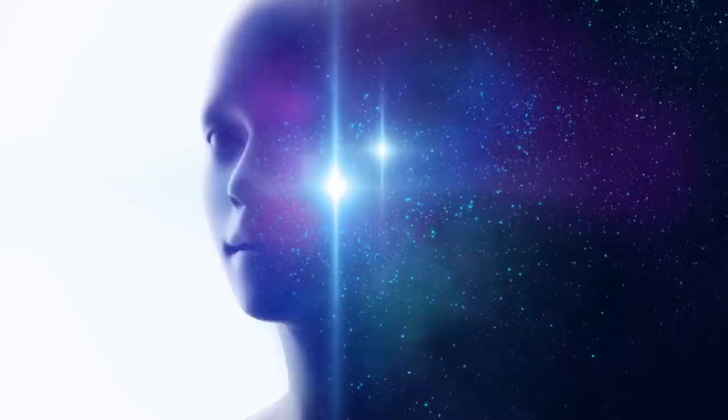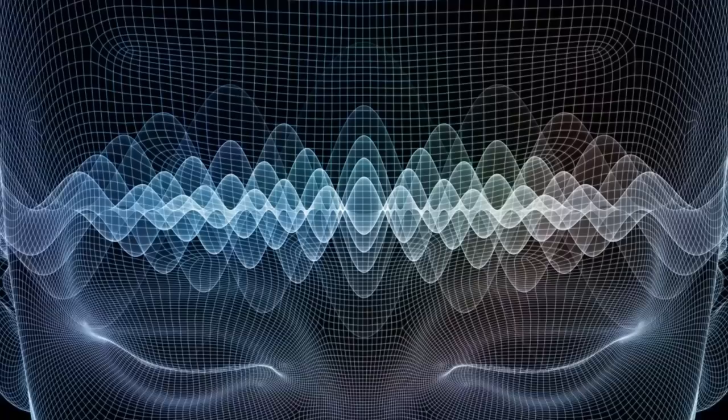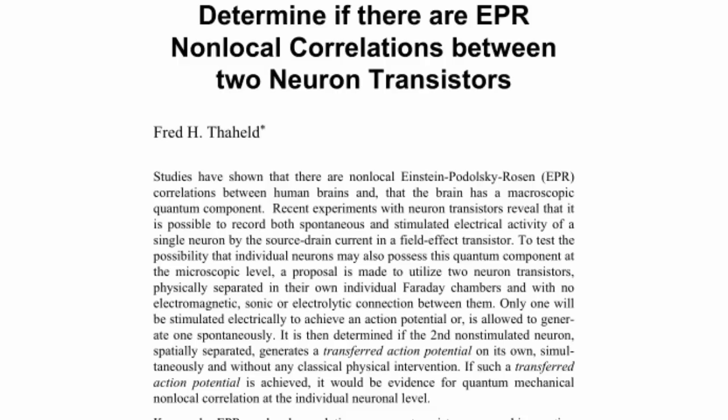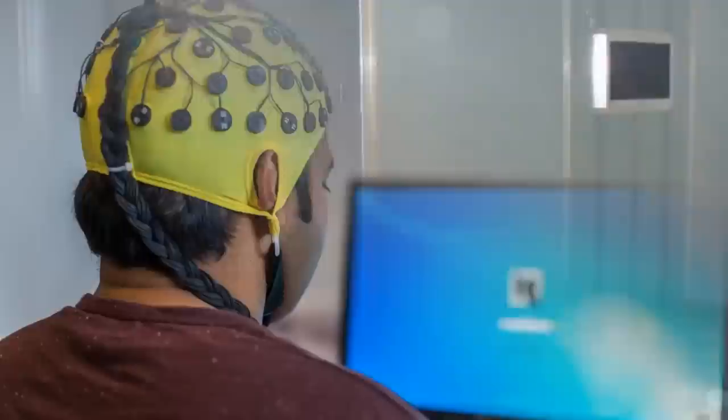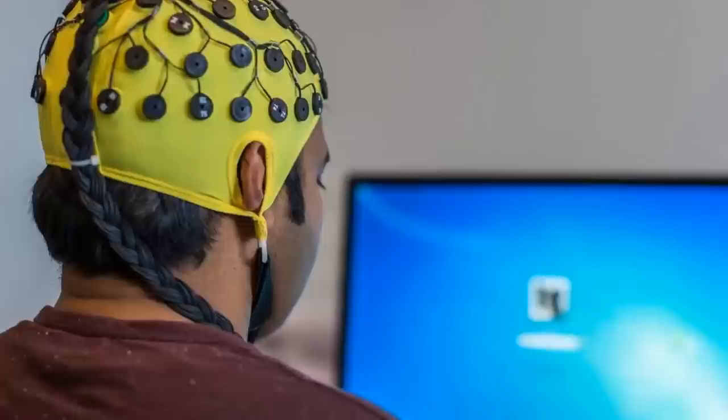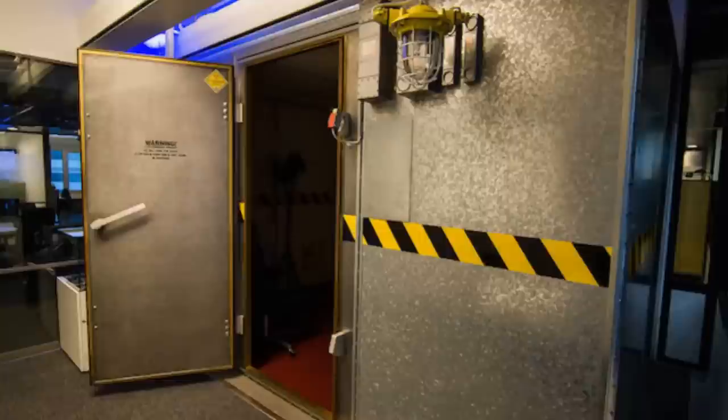He concluded that all individual minds were linked to one another via this non-local matrix. Subsequent studies conducted by other researchers seem to validate Grinberg's original findings. Physicist Fred H. Theheld, for instance, used Faraday cages to shield two separate compartments from electromagnetic energies. One person was hooked up to an EEG in one chamber, and another person was likewise attached to an EEG in the other chamber.